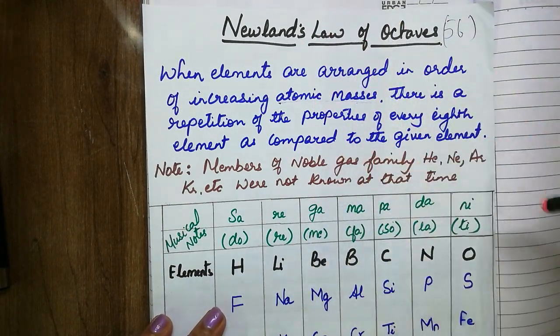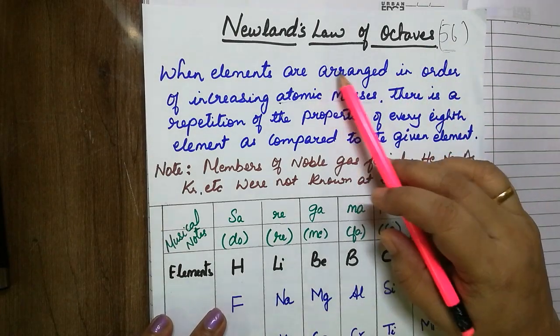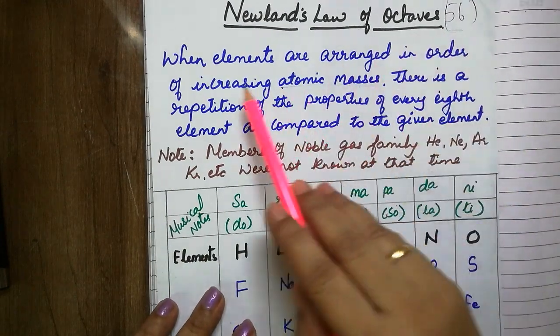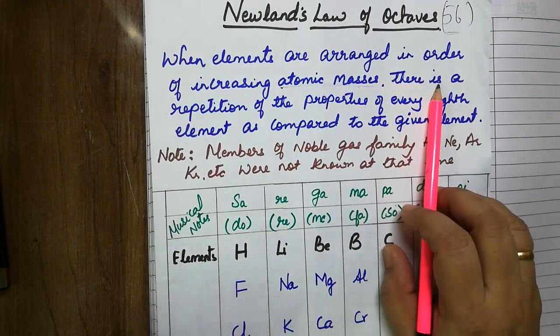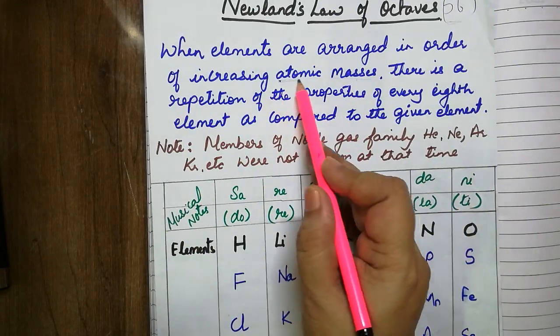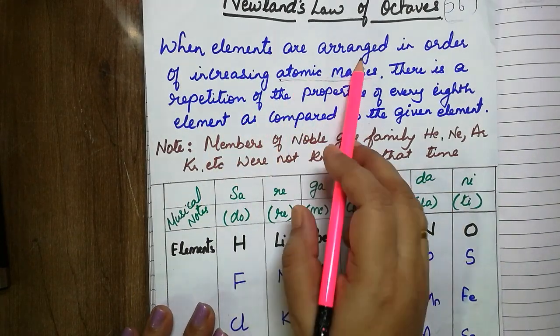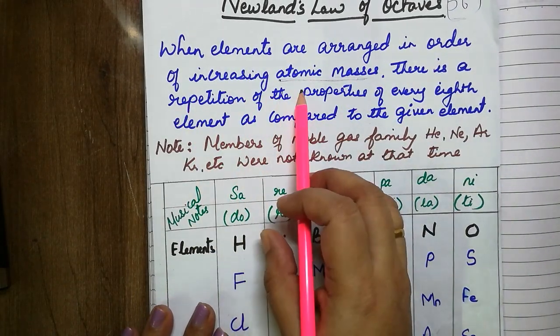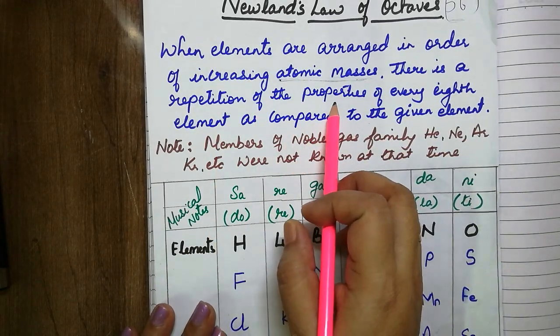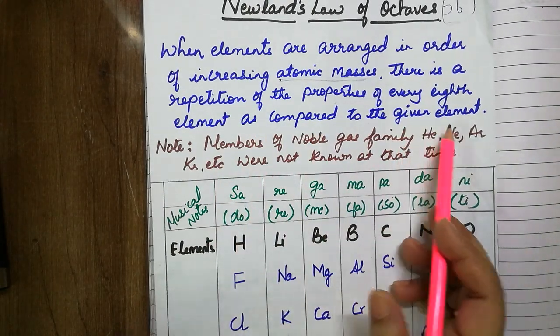During his time, there were 56 elements known. He arranged these 56 elements according to their increasing atomic masses. When elements are arranged in order of increasing atomic masses, there is a repetition of the properties of every 8th element as compared to the given element.